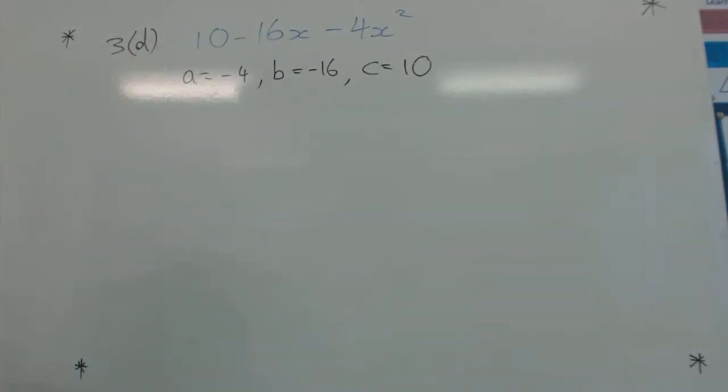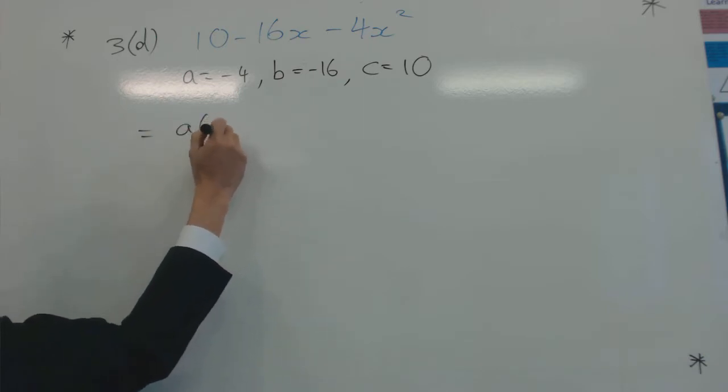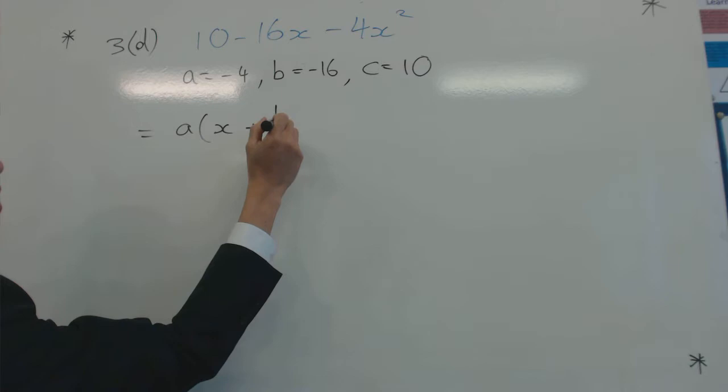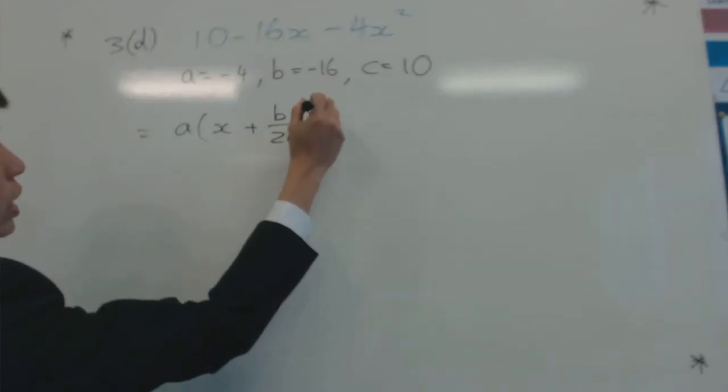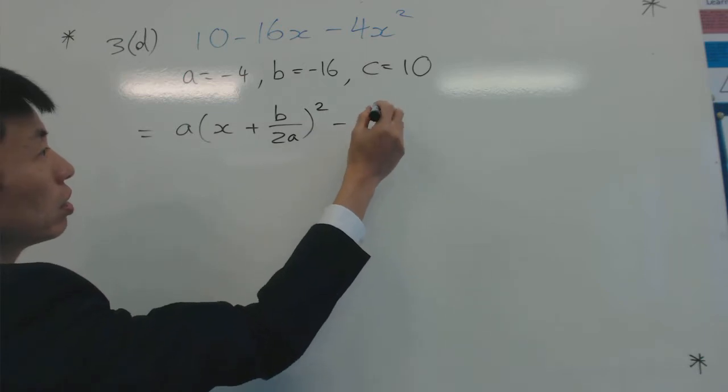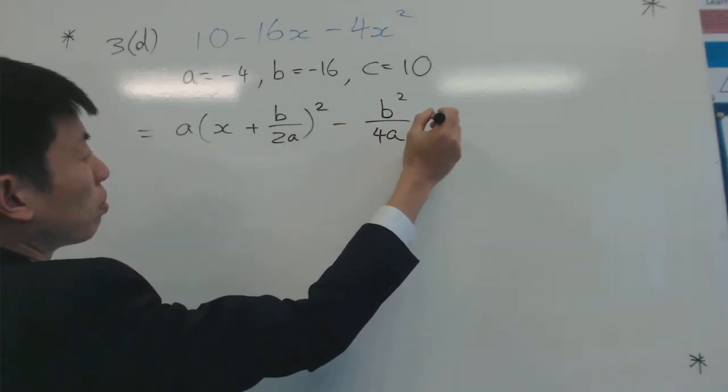So the formula then: a open bracket x plus b over 2a close bracket squared - I'm trying to dictate it every time so I can learn as well - b squared over 4a plus c.